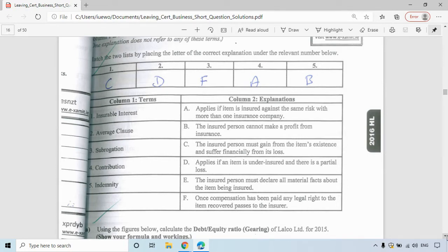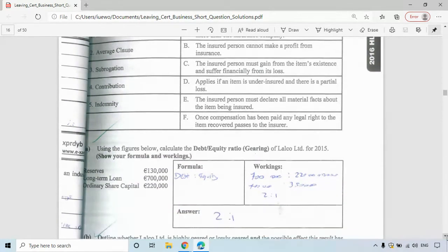Subrogation is F: once compensation has been paid out, any legal rights or salvage rights pass to the insurance company. Contribution is A: applies if an item is insured against the same risk with more than one company. Indemnity is B: you cannot make a profit from insurance. The letter E—we must disclose all material facts about the item being insured and tell the truth when applying for insurance—that would be utmost good faith, which is not listed there.